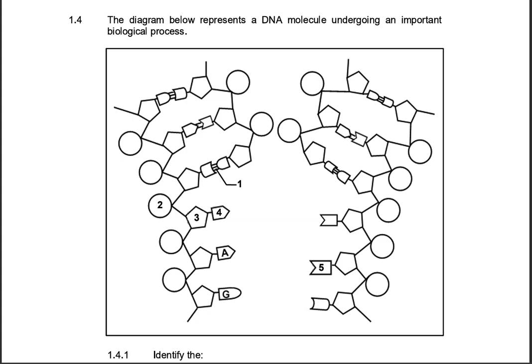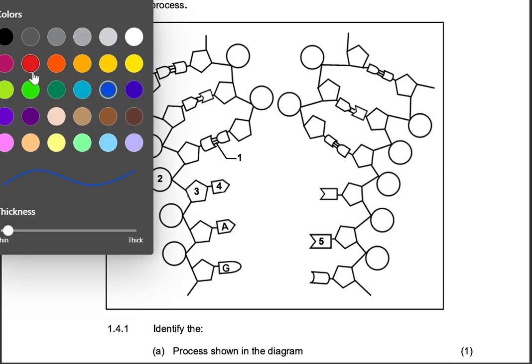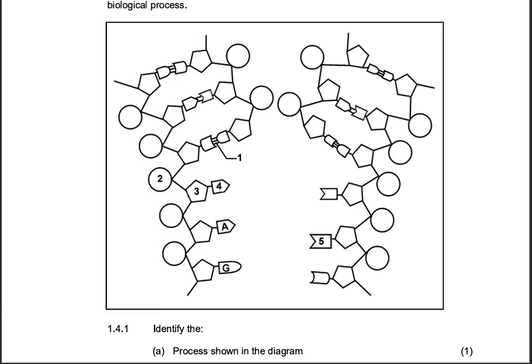Let's start. We are given a diagram below representing a DNA molecule undergoing an important biological process. You can obviously quickly analyze the diagram and you can see that you are having DNA replication, which is a DNA molecule making a copy of itself.